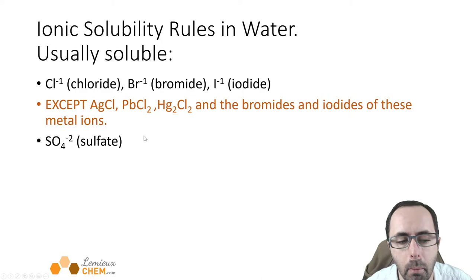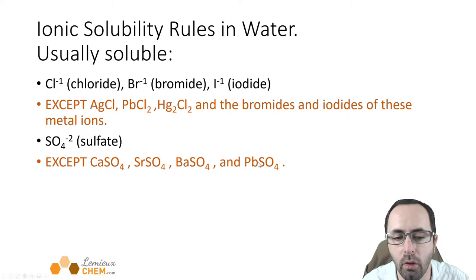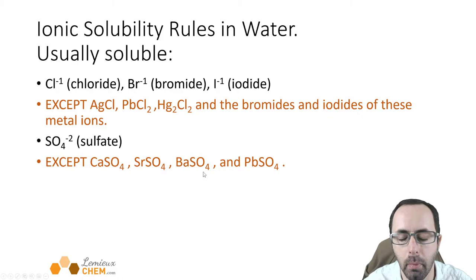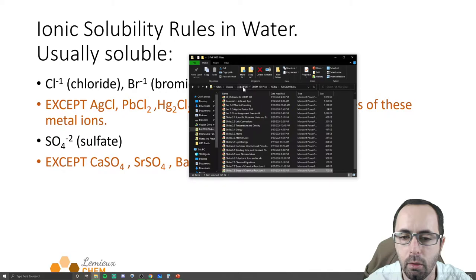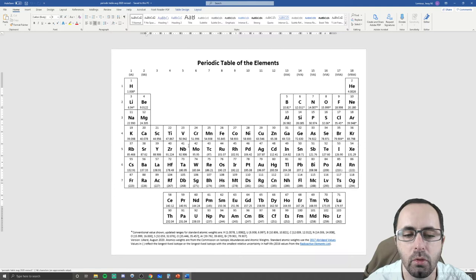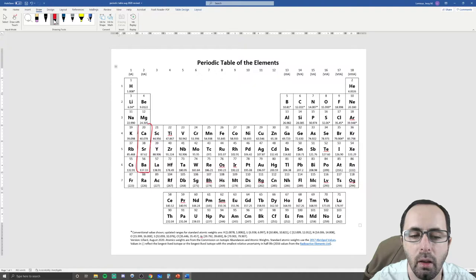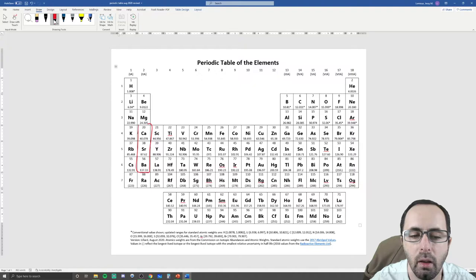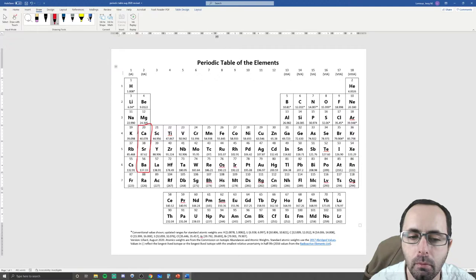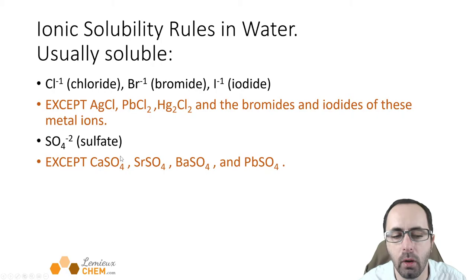If there is a sulfate ion in your ionic compound, it will usually be soluble too, with a few exceptions: calcium sulfate, strontium sulfate, barium sulfate, and lead(II) sulfate. An easy way to memorize calcium, strontium, and barium is that they are all part of group 2 on the periodic table — right here together. So sulfates are generally soluble except for calcium, strontium, barium, and lead(II) sulfate.